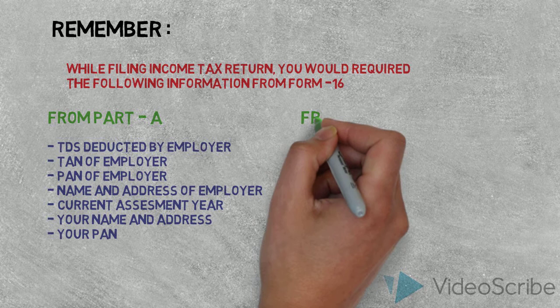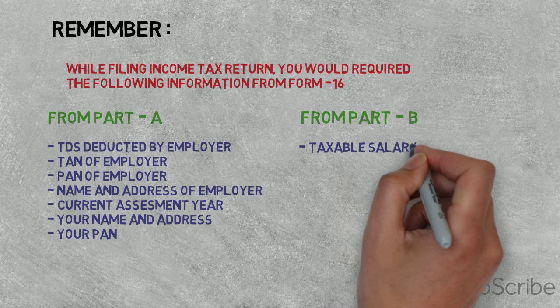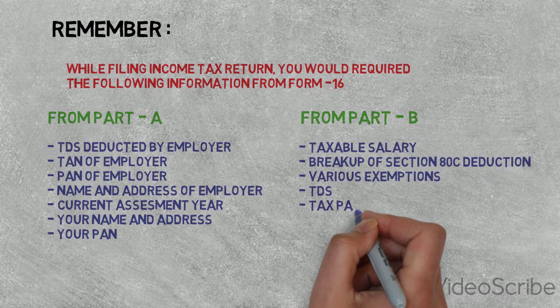From Part B of Form 16, you need: taxable salary, breakup of deductions, TDS, and tax payable or refund due.